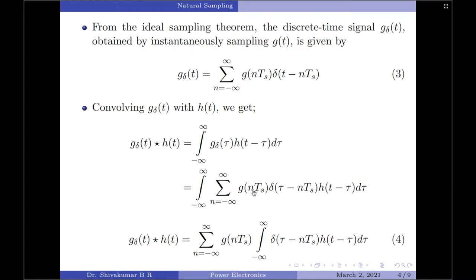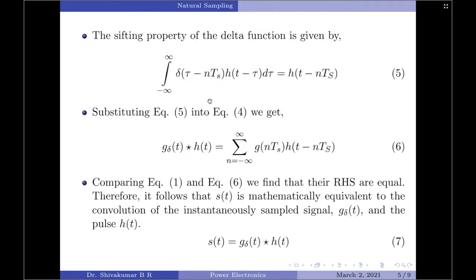After simplifying this equation, we get summation n from minus infinity to plus infinity of g(nTs), since these are only the sample values, and then the integration is applied to the continuous functions delta(tau − nTs) and h(t − tau) d tau. This integral of the delta and h functions can be simplified using the sifting property of the delta function, given by equation 5: the integral from minus infinity to plus infinity of delta(tau − nTs) into h(t − tau) d tau simplifies to h(t − nTs).